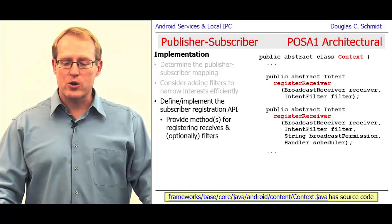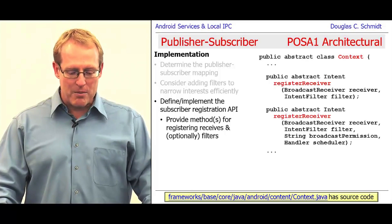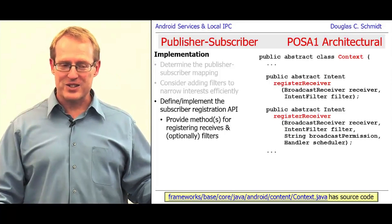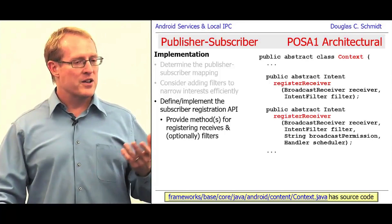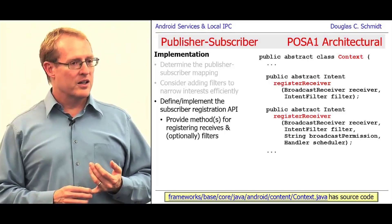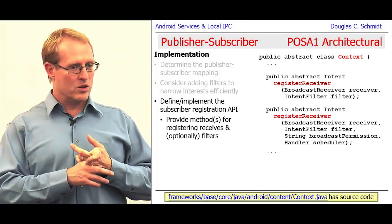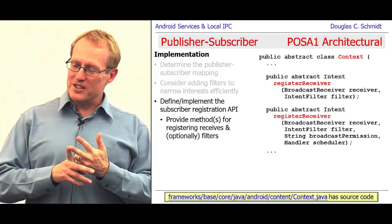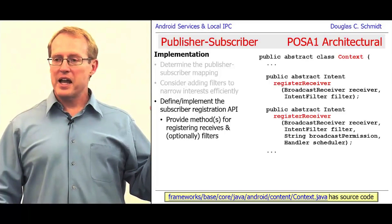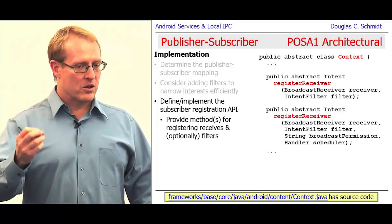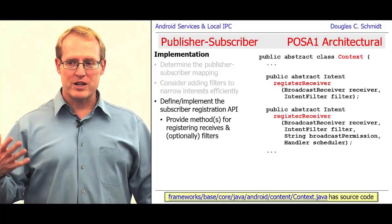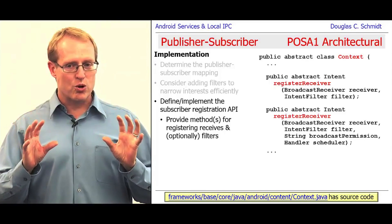Another thing you need to do is figure out how to define and implement the subscriber registration API. You have to figure out how to let applications — which could be activities or services — go ahead and register broadcast receivers to get called back. You can have a register receiver model where you pass in the receiver you want called back and optionally the intent filter. You can also give permissions and even a handler specifying where you want the call to take place. So you have a lot of flexibility in Android about how you control where things are going to run.